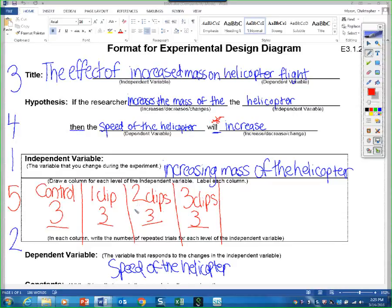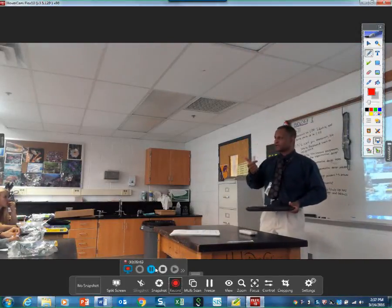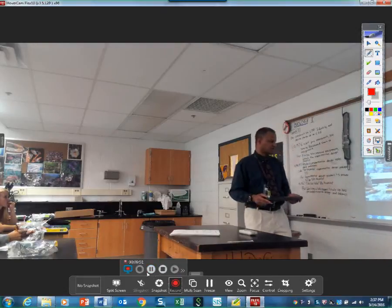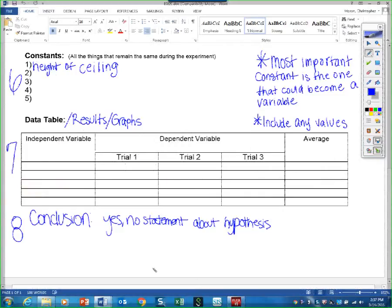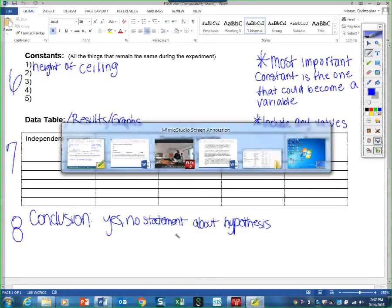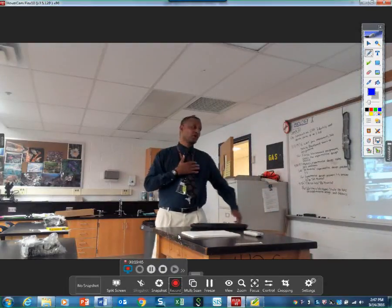Now we will list constants. Number six is the constants. Pay close attention. The most important constant is the one that can become a variable. Include values. If I give a word problem and there's a constant there and they tell you the value, I expect you to write about it. Seven is the results, and then eight is the conclusion - yes, no statement about the hypothesis.